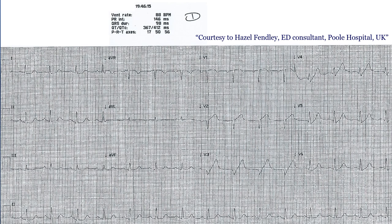Looking at this ECG from an ischemia point of view, there are many concerning things. Starting with lead AVR, there is ST elevation, which is concerning in the presence of chest pain. Looking at the inferior leads, there is ST depression in II, possibly III — though the baseline is a bit wavy — and definitely in AVF. Looking at the anterior leads, there is a weird-looking ST depression with a hyper-acute T wave in V3, V4, and possibly V5.